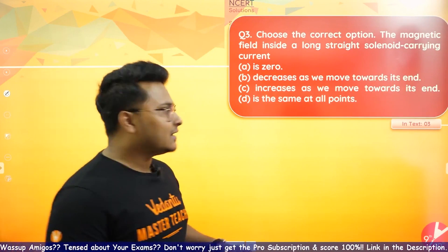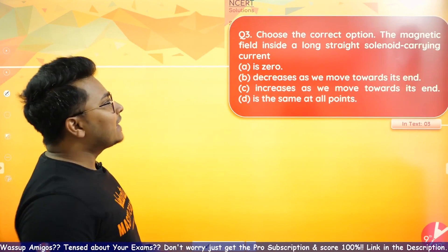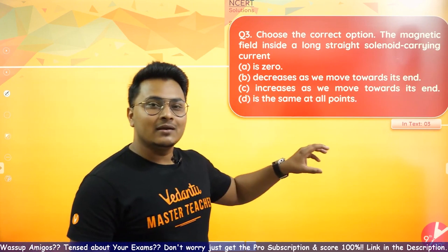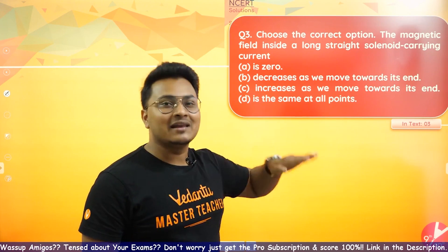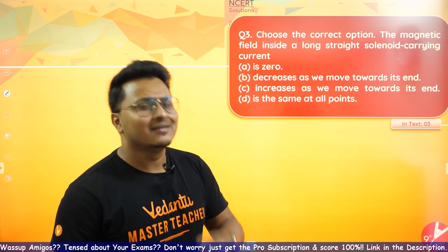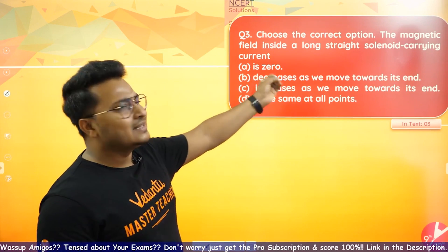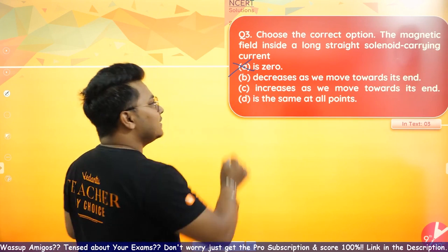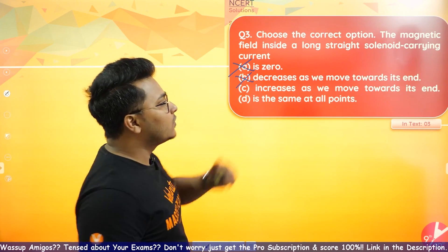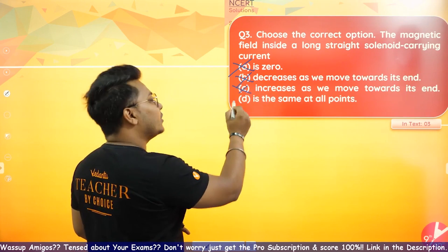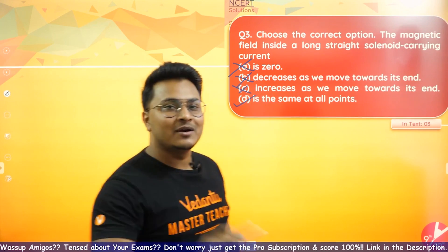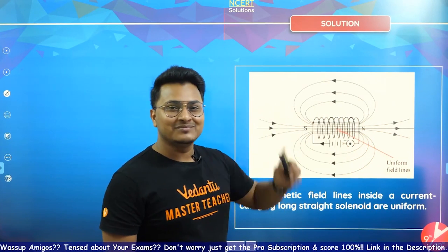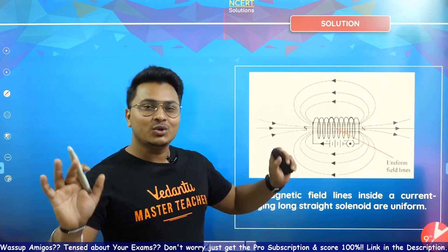Question three: Choose the correct option — the magnetic field inside a long straight solenoid carrying current. Because all the magnetic field lines are parallel and equidistant, they should be uniform. Option A is zero — wrong. Decreases as we move towards its end — no. Increases as we move towards its end — no. Is the same at all points — yes! It is uniform, constant, and the same at all points. Absolutely correct!